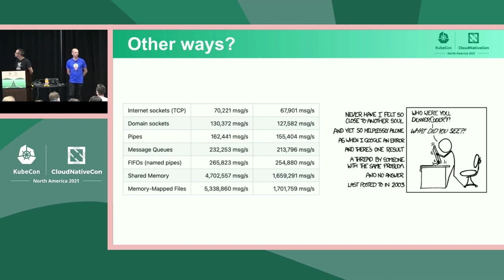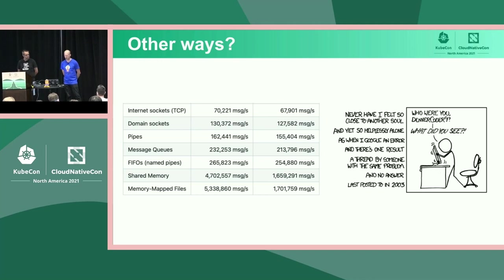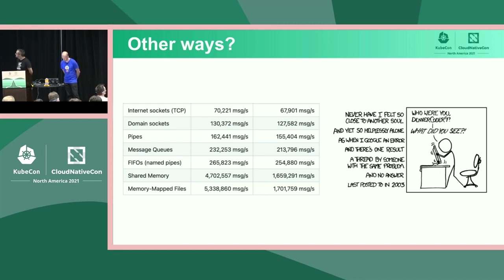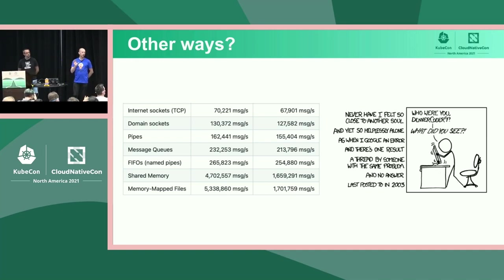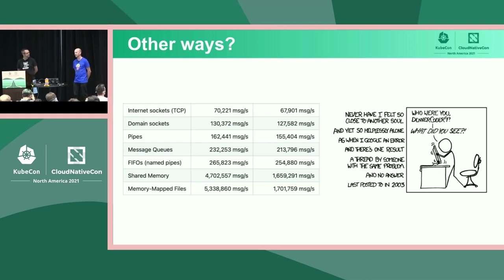Are there other ways of doing container IPC? Looking at messages per second benchmarks for things like pipes, POSIX and SysV message queues, shared memory, and memory-mapped files — memory-mapped files can be around 20 times faster than TCP. But these are kind of unproven and there's not much documentation out there — it's been a bit 'here be dragons' in my research. I'd love to hear from anyone who has experimented with memory-mapped files between containers.